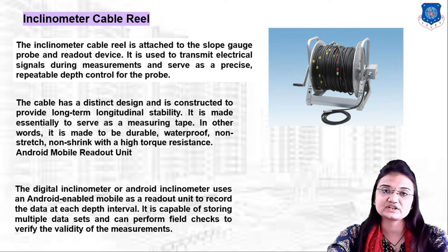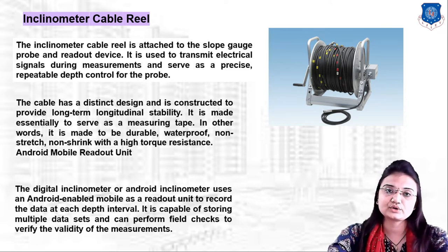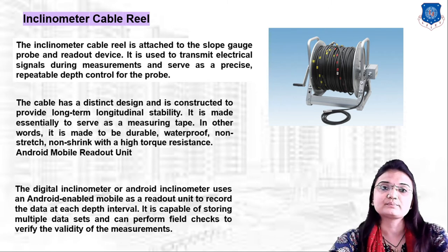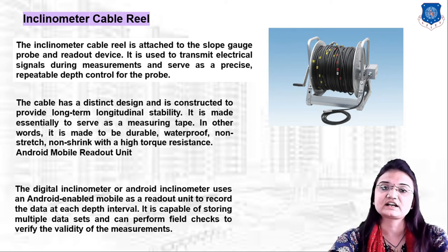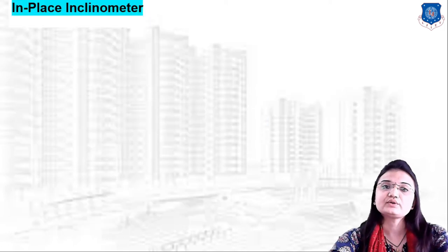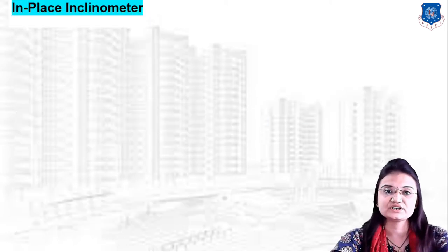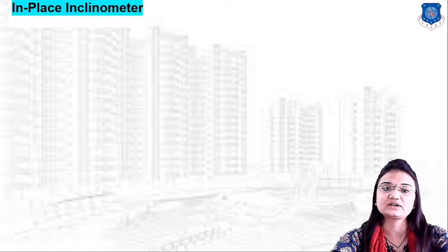The cable ring connects the inclinometer probe to the readout unit. The basic components of the manual or digital inclinometer are: the inclinometer probe, inclinometer casing, and inclinometer cable. The second type of inclinometer is the in-place inclinometer.